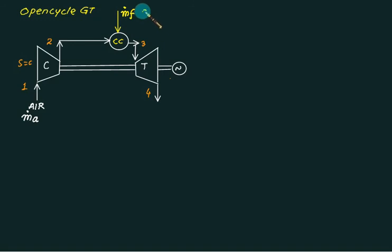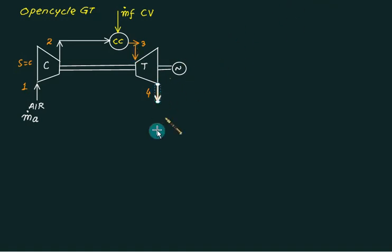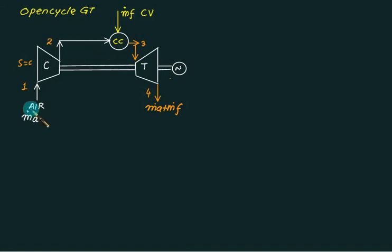Fuel is burned with mass flow rate m-dot-f and calorific value CV, so the net heat supplied externally is m-dot-f multiplied by CV. At the turbine exit, the mixture has mass flow rate m-dot-a plus m-dot-f. On the turbine side use specific heat cpg for the gas mixture, and on the compressor side use cp_a for air.